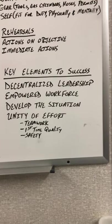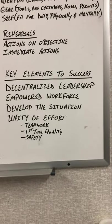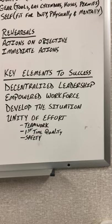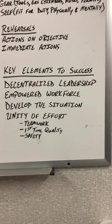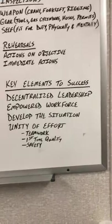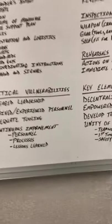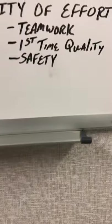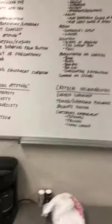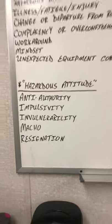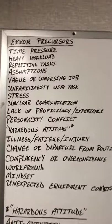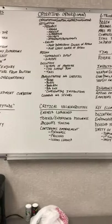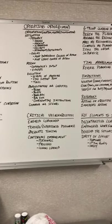Peer correction — coaching and mentoring — is developing the situation and being that decentralized leader. The unity of effort is working as a team to accomplish the work scope with first-time quality and first-time safety. Safety being listed third doesn't mean it's less important — we need to ensure that teamwork, first-time quality, and first-time safety are all priority one. If an individual is demonstrating a hazardous attitude, he's compromising our ability to negate those error precursors and accomplish our mission, because other people are having to watch that person or deal with rework.